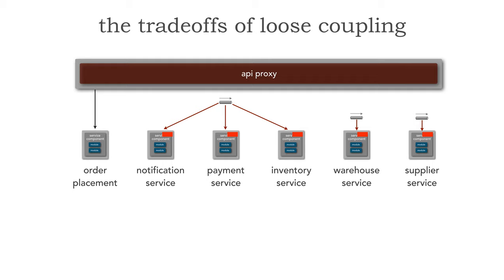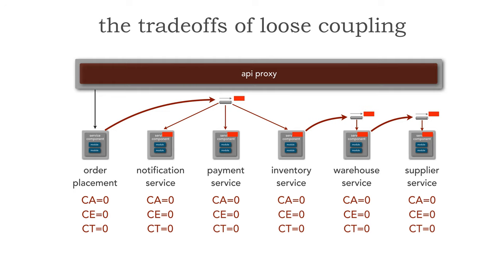We have the same flow — but let's analyze the coupling level. The coupling level between services is, in fact, zero. Because, as illustrated between order placement and the notification, payment, and inventory services, order placement really does not know which services, if any, are even going to pick up that message, how many, or which types. Inventory service doesn't know which warehouse service or system will pick that message up. So effectively, we have fully decoupled the communication points. I will admit we do have a total coupling level of zero, but we are coupled by contract — and there are other ways of dealing with that with CDC, consumer-driven contracts, and value-driven contracts — but we'll keep that for another Software Architecture Monday lesson.